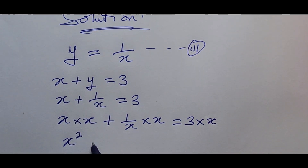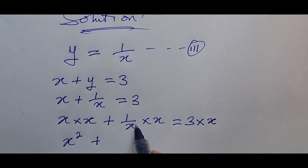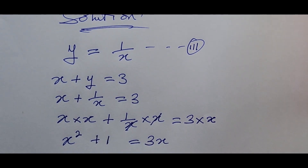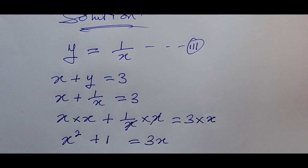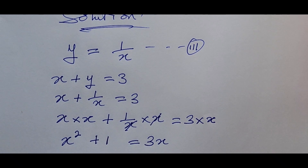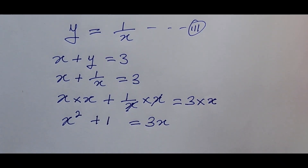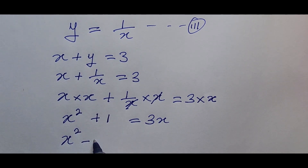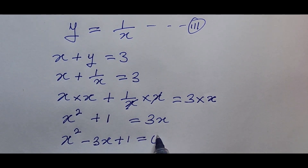We're going to have x squared, and that gives us one. So we have x squared plus one equals three x. All we need to do is rearrange the equation — take all the terms on the right-hand side to the left-hand side. This gives us x squared minus three x plus one equals zero.